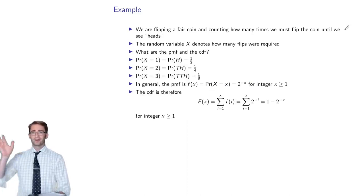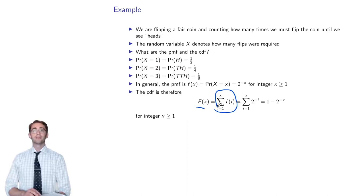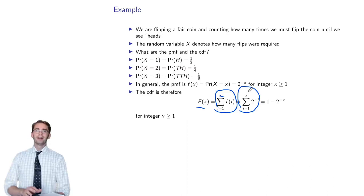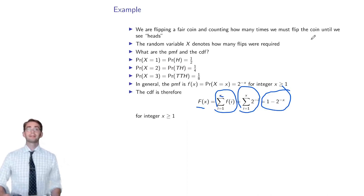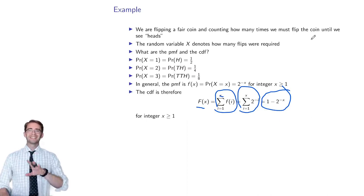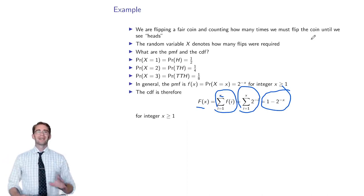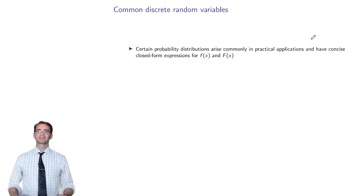The CDF, summing the PMF from i equals 1 to x, is the sum of 2^(−i) from i equals 1 to x, which equals 1 minus 2^(−x). You can use Wolfram Alpha or Maple for this — you don't need to memorize sums of infinite series. This is a probability course, not a summing of series course.